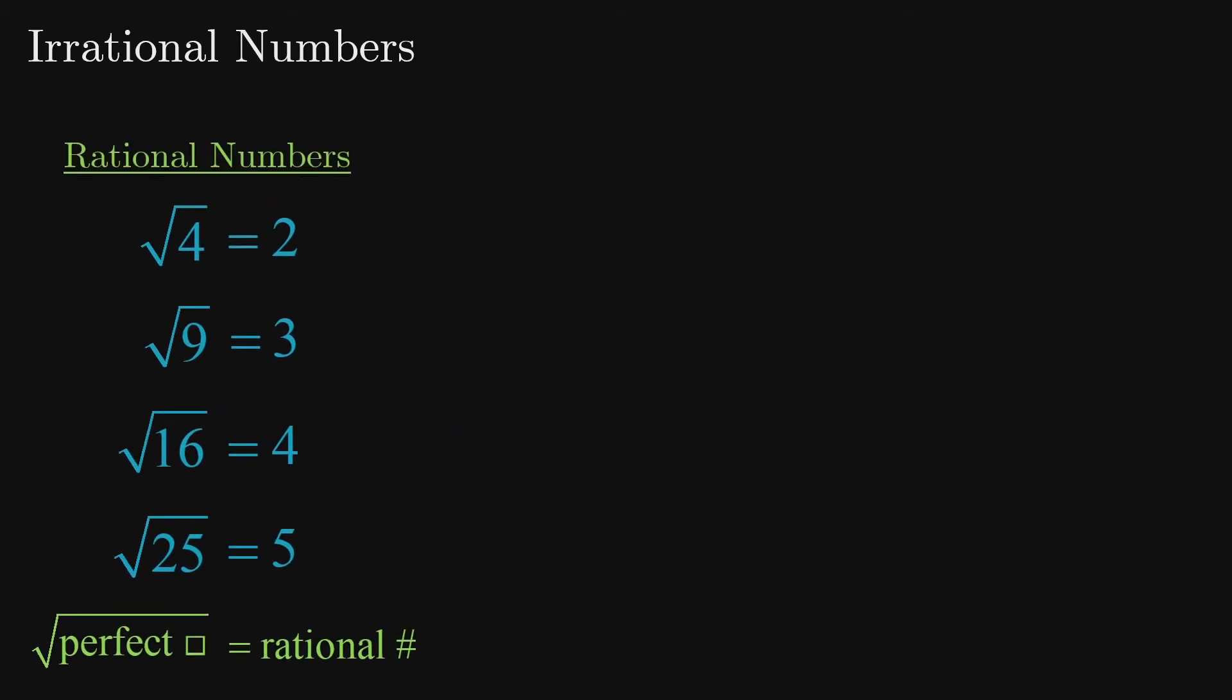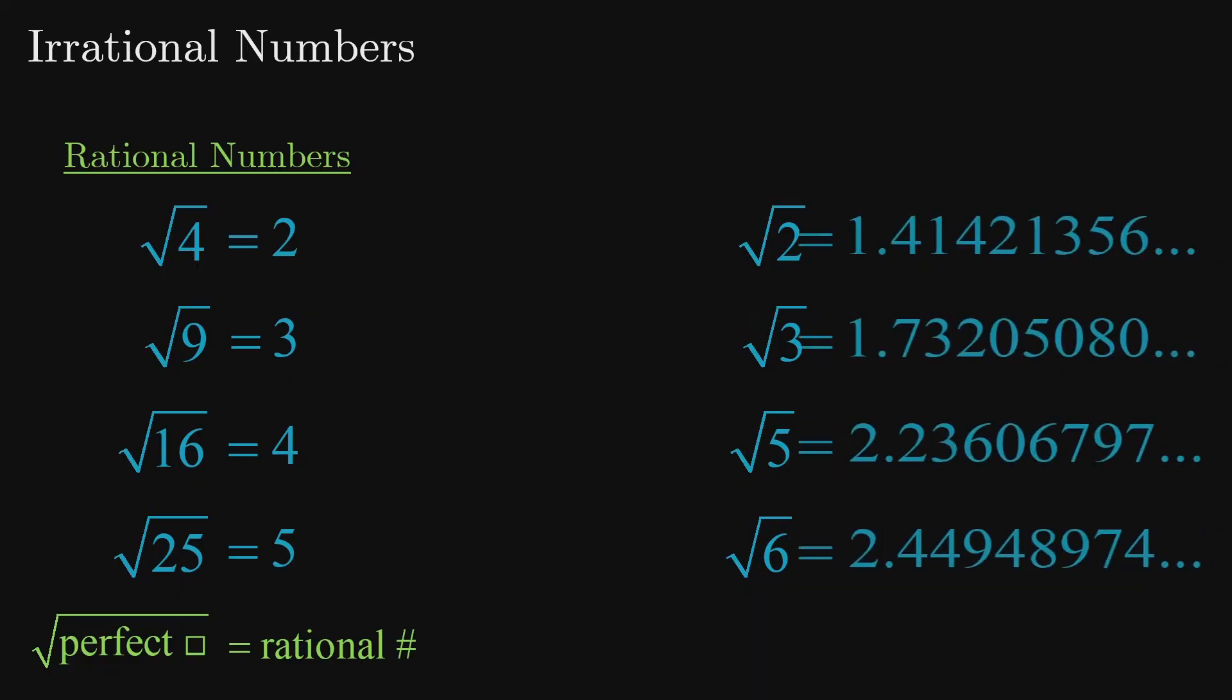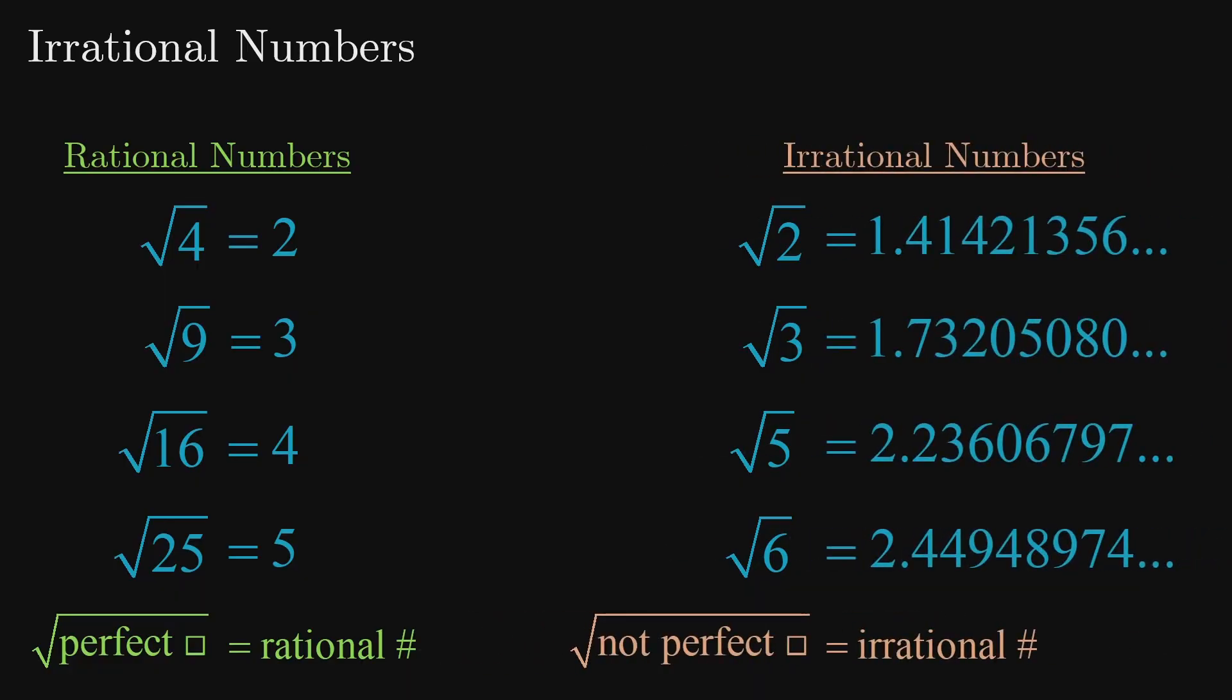But if we square root a whole number that is not a perfect square, the result is irrational. To see why, check out the video dedicated to that topic.